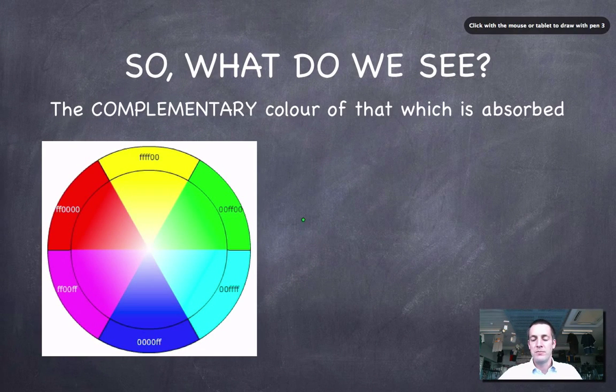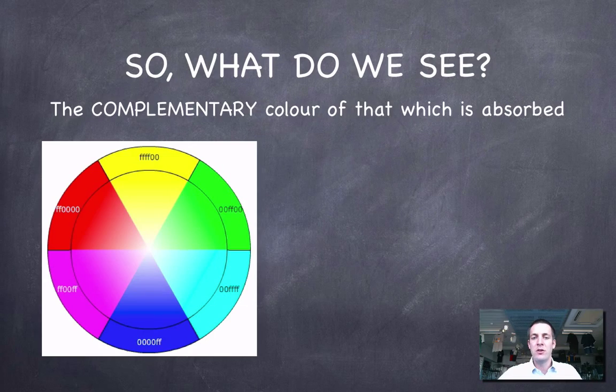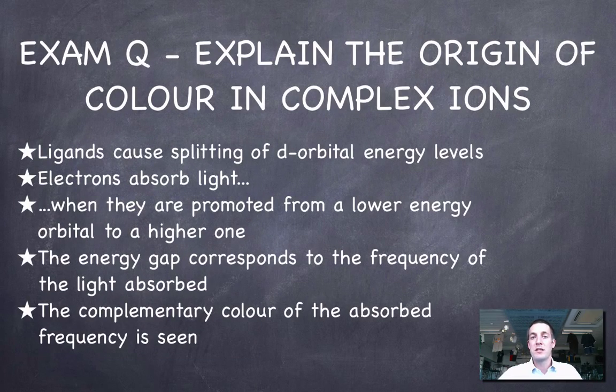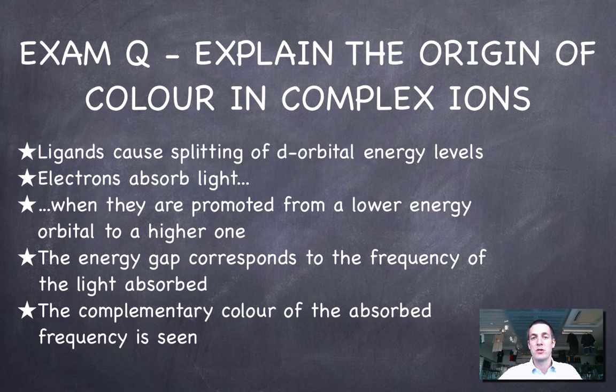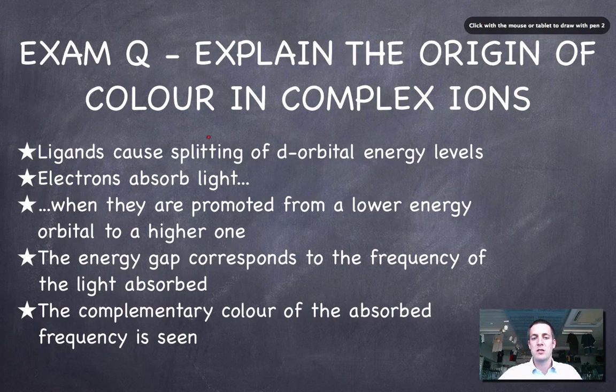So now, moving on to what we might say if we encountered an exam question, because we've got to make quite a lot of points here. A common question to see is, explain the origin of color in complex ions. Well, we'd start off by making the point that ligands cause splitting of d-orbital energy levels. So this is the first thing that we said, that as ligands approach, the energy levels of the d-orbitals are split.